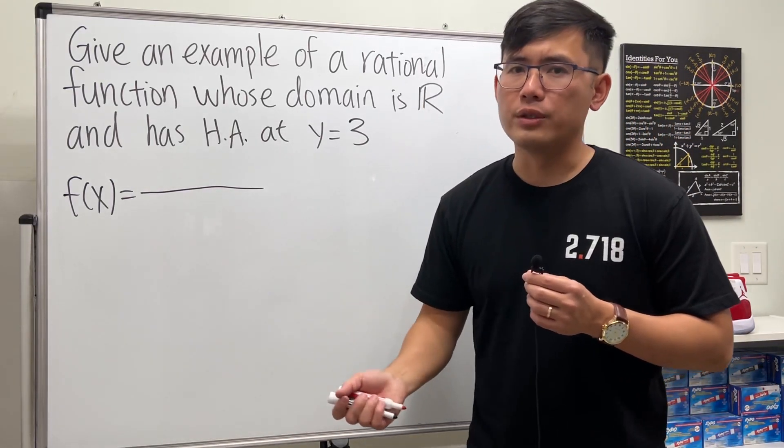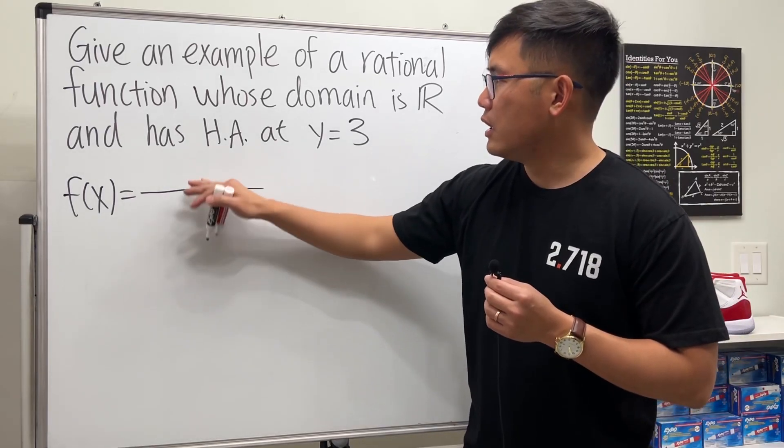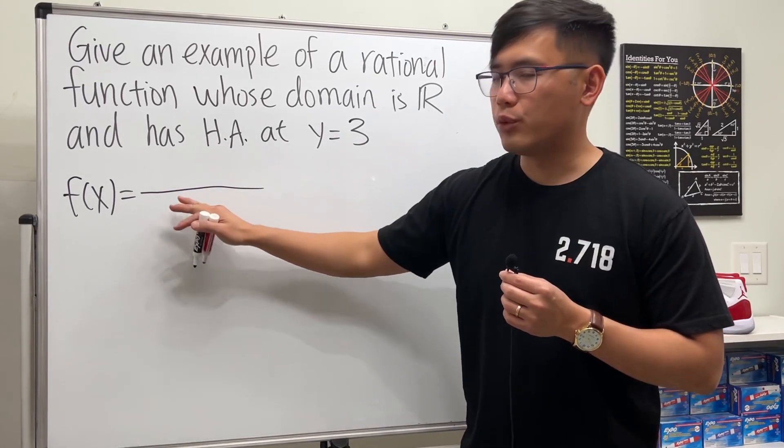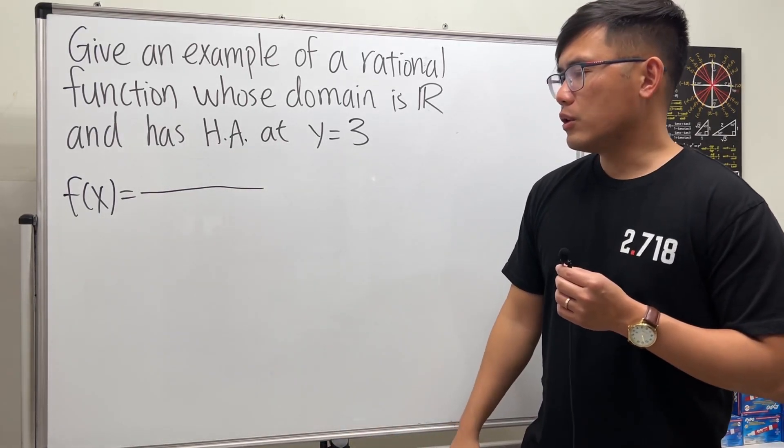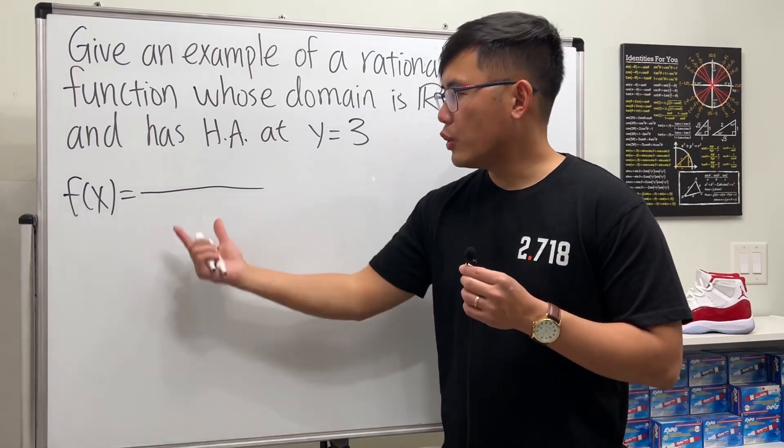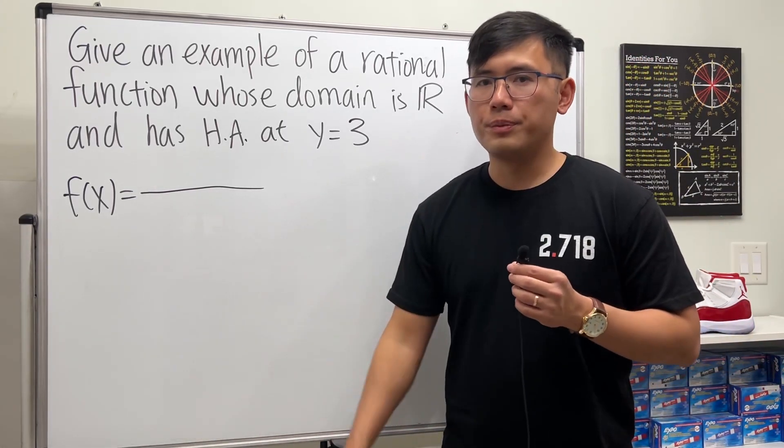In that case, we just have to make sure that the bottom is never equal to zero, because when we have a rational function we have to worry about the bottom.